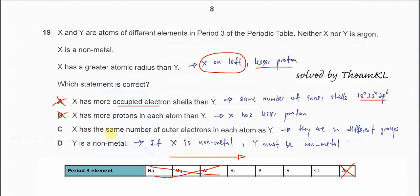Option C: X has the same number of outer electrons in each atom as Y. Outer electrons let us know which group they are in. Since X and Y are different elements in Period 3, they must have different outer electrons because they are in different groups. So this is out.